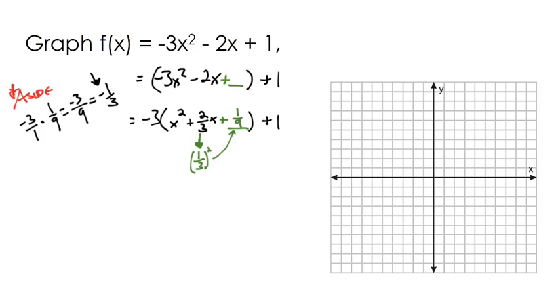This is the number that we actually added whenever we put it right here. So this is really a negative one third in disguise. So if I have a negative one third there, I've got to zero it out with a positive one third. Now let's see what we got next.